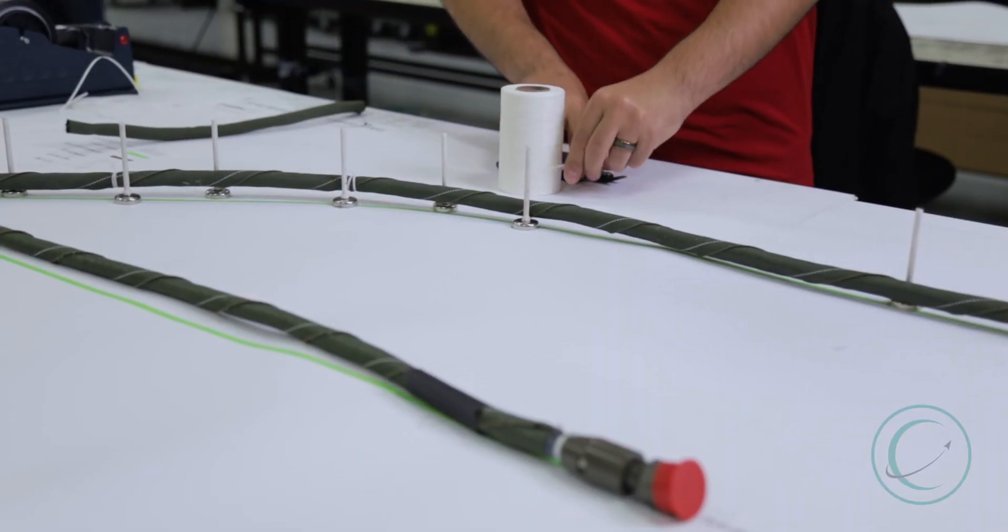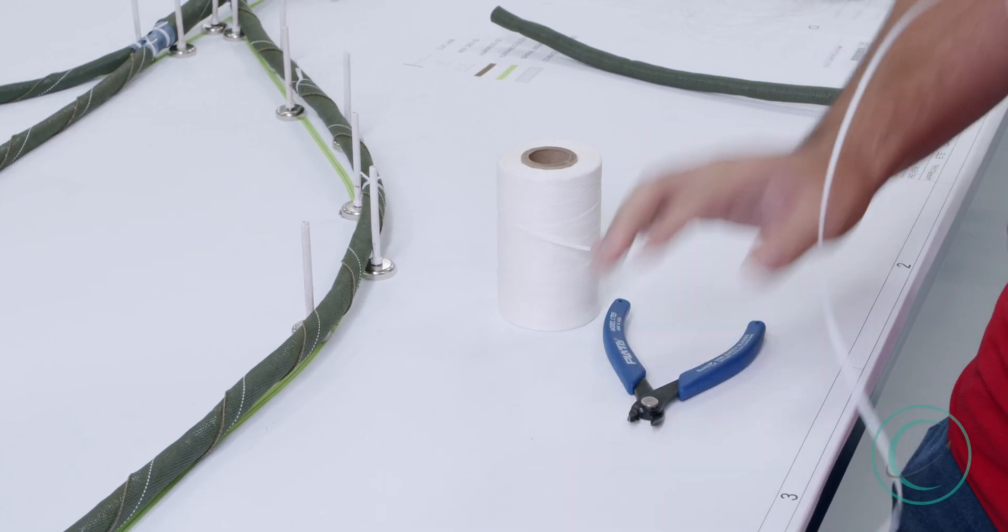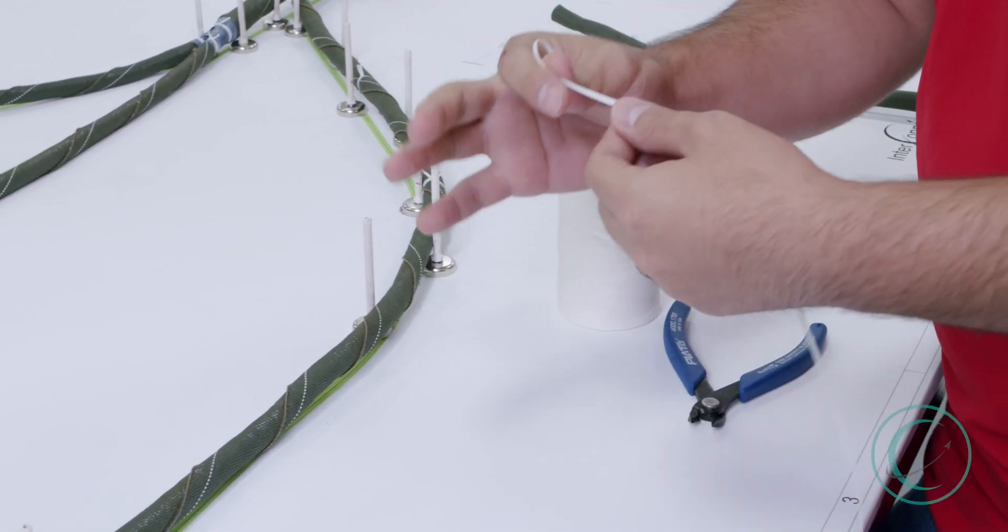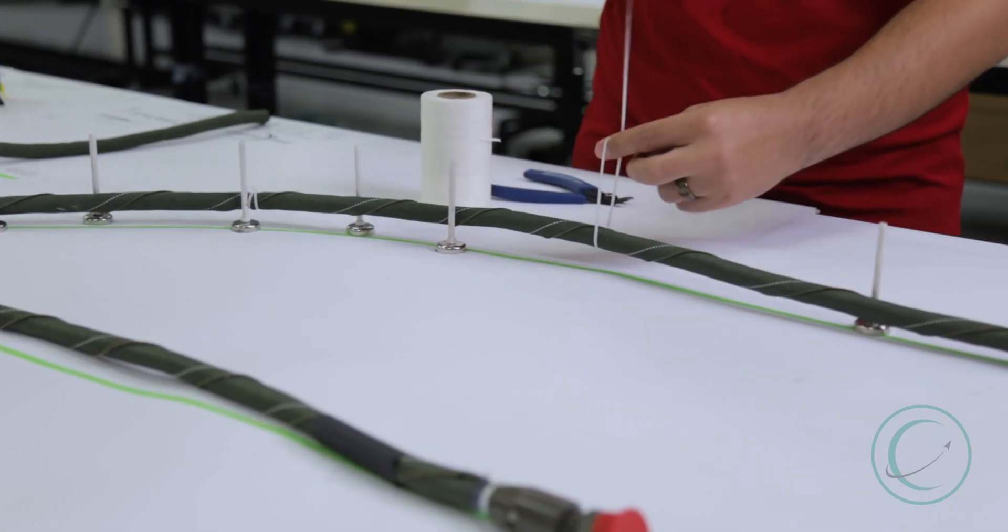Okay, we're going to demonstrate a single string tie right now. You take about two feet, give or take, of the string tie. You install it on the wiring harness just like this.